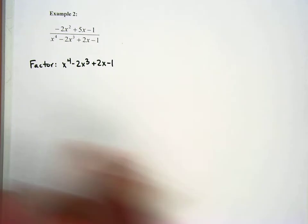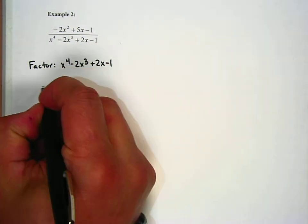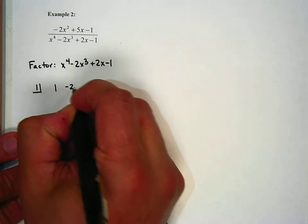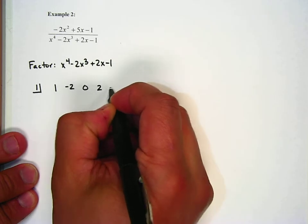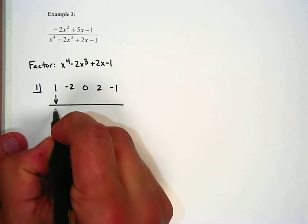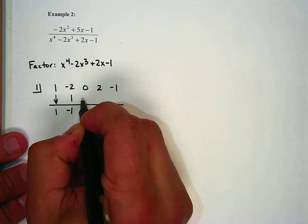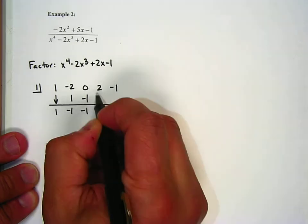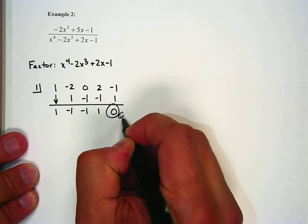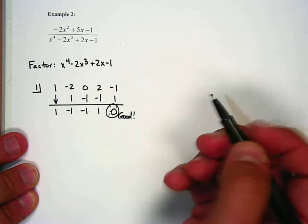So we're going to do synthetic division to break this down. We'll try 1. Our coefficients are 1, negative 2, 0, 2, negative 1. Bring down the 1, then multiply up and add down through all the steps. We get 0 at the end — that's good.